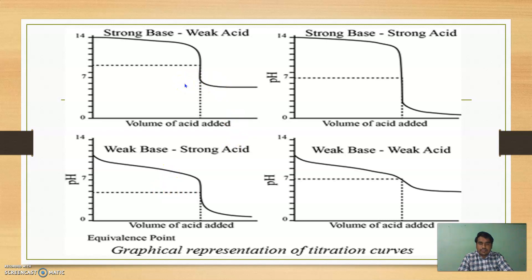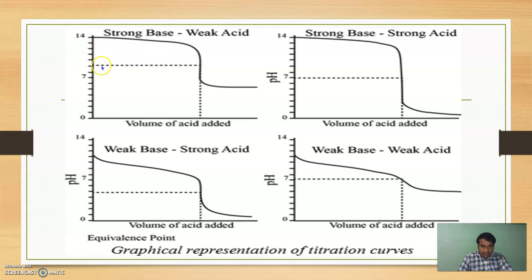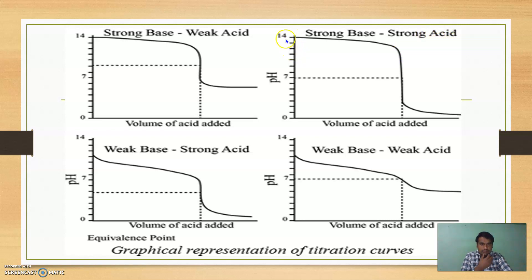Now, these are the graphical representations of acid-base titration. For strong base vs. weak acid: we take a strong base in the conical flask and add weak acid drop by drop. The base has a pH of 14; after addition of weak acid, this pH decreases toward zero, and we obtain an end point or neutralizing point. For strong base vs. strong acid: similarly, we add strong acid from the burette to decrease pH from 14 toward zero, giving an end point at exactly pH 7.